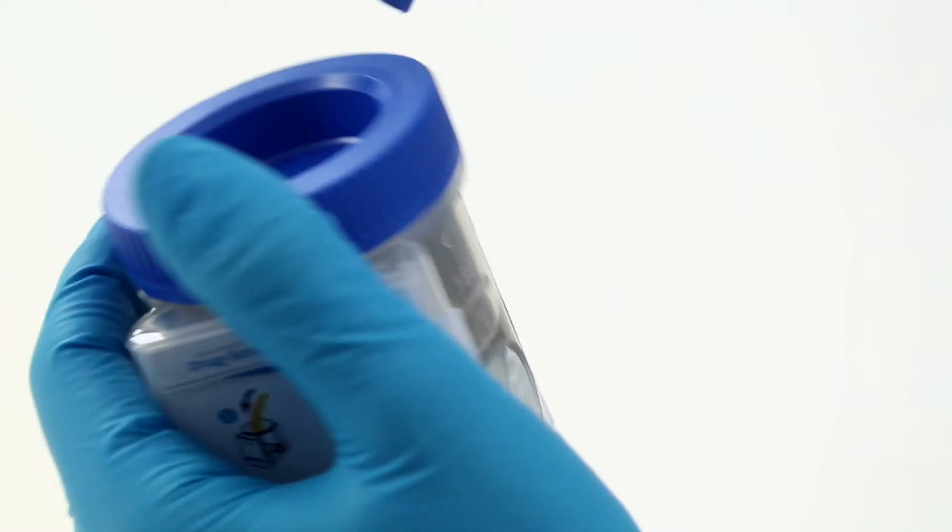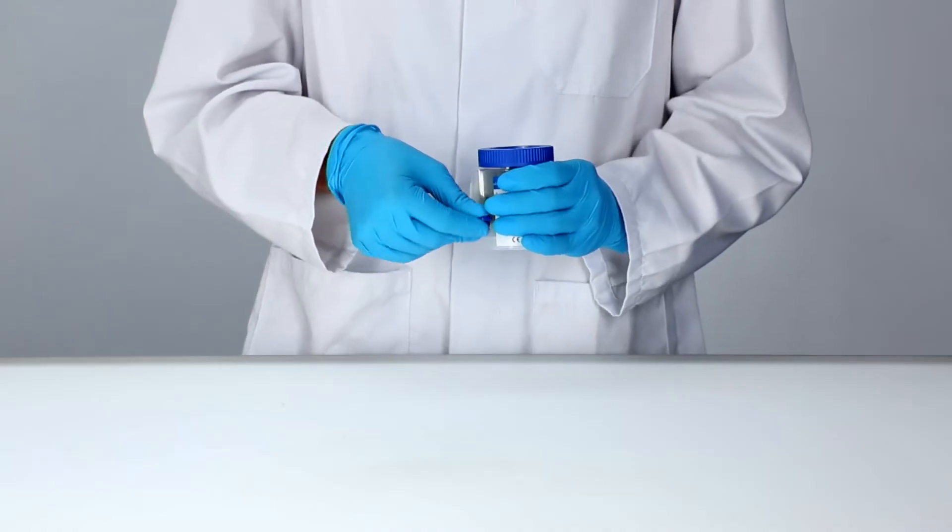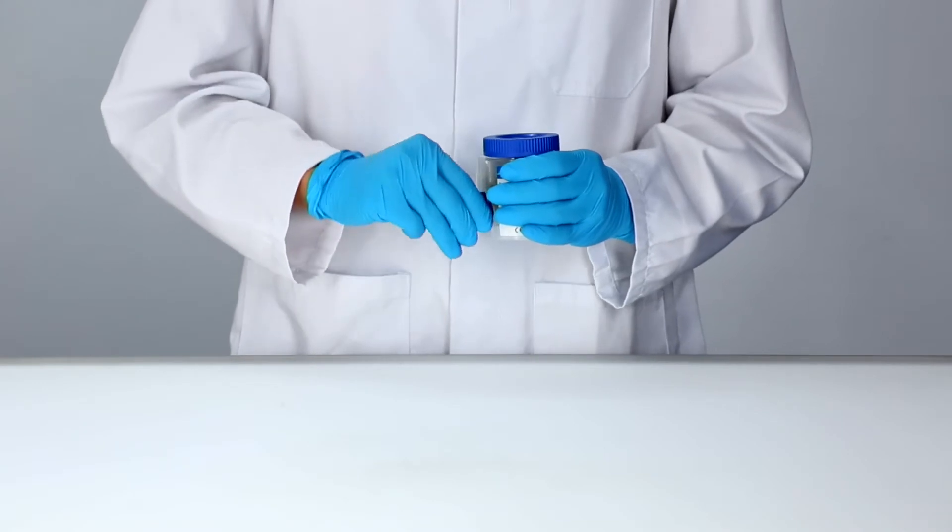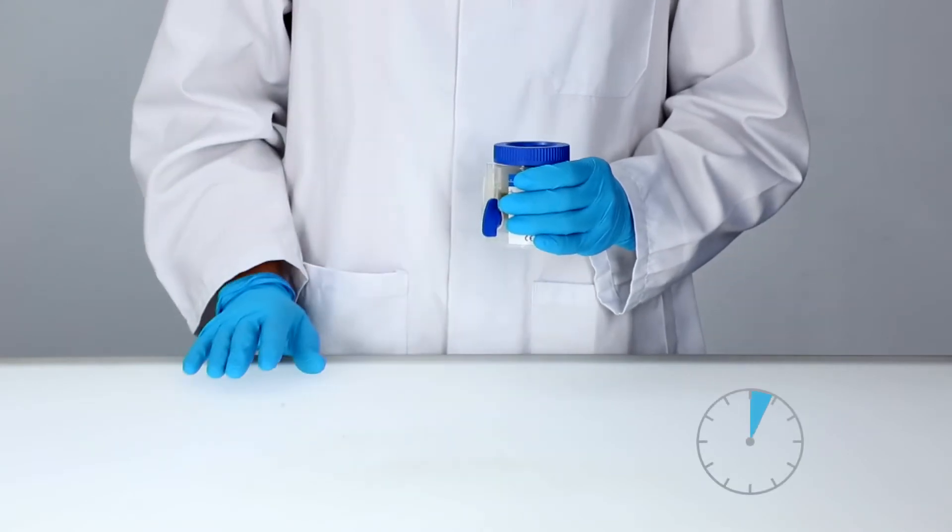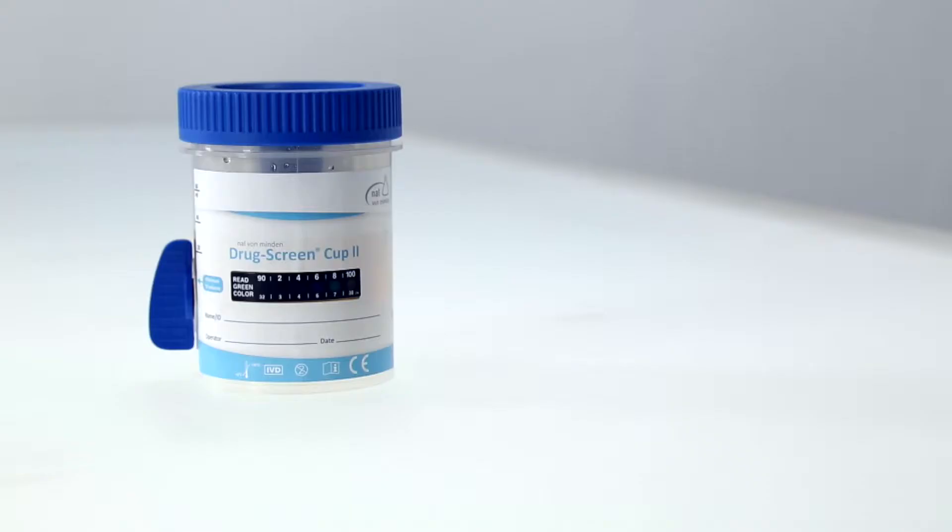Remove the key from the lid, put it in the keyhole provided and turn it 180 degrees clockwise. Start your timer immediately. Remove the peel-off label and place the test on a flat surface.